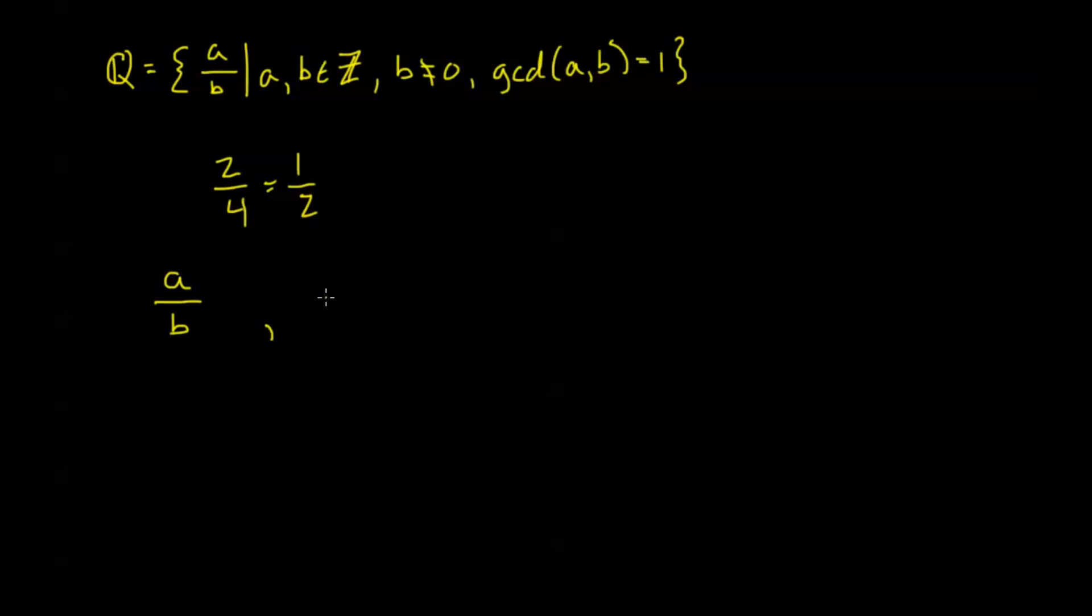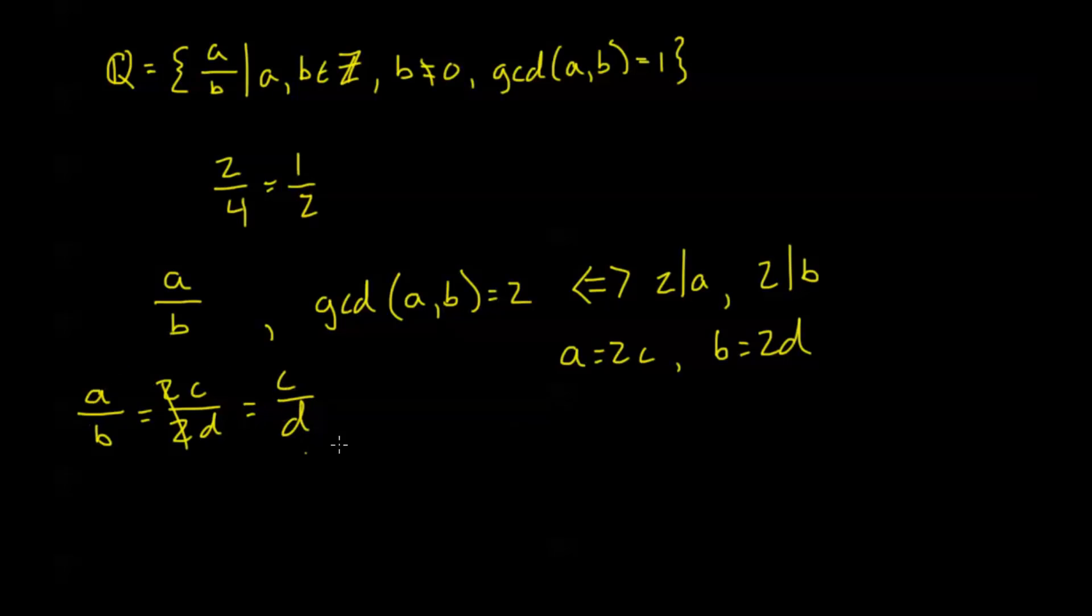Let's just say I have this A over B, where GCD of A and B equals 2, for example. Well, this just means that 2 divides A, and 2 divides B, doesn't it? So we have some other number where A is going to be equal to 2C, B is going to be equal to 2D, right, from our definitions before. So A over B, this is the same thing as 2C over 2D. I can cancel those twos. So that's the same as C over D.